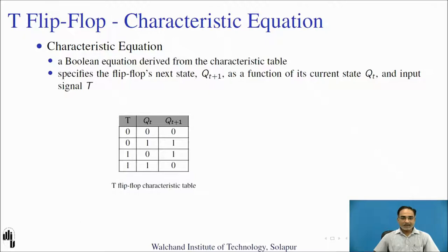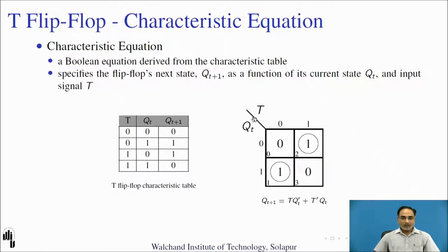Now let us derive the characteristic equation using this table. We are going to derive the expression for next state, that is Q(T+1). We will require a two-variable K-map. The inputs used for this two-variable K-map are T and Q. T is used for columns, whereas Q(T), that is the present state, is used for rows. By mapping the next state column on this K-map, you will see that you have two minterms — minterm 1 and minterm 2. There is no grouping possible, so we will keep these as single groups and go for the final expression.